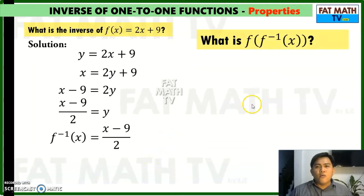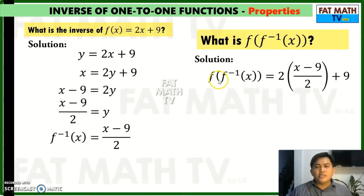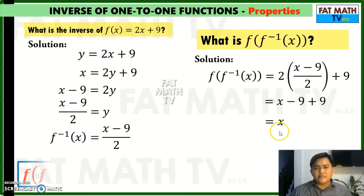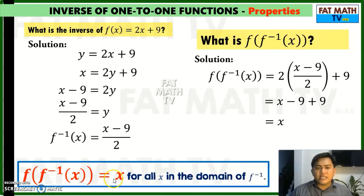Another question: what if you're asked to find the composition of functions f of f inverse of x? We will replace x in f of x with f inverse. So f inverse is x minus 9 over 2 — replace x with x minus 9 over 2. So 2 times x minus 9 over 2, plus 9. Simplifying, the 2 will cancel here, giving x minus 9, plus 9 — negative 9 plus 9 is 0 — so that is x. Property number 2: f of f inverse of x is just equal to x for all x in the domain of f inverse.